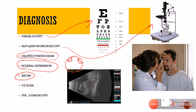CT scan and B-scan are important especially in trauma cases to detect intraocular foreign bodies. FFA can identify neovascularization but only when vitreous hemorrhage is localized, not diffuse, since hemorrhage causes blocked fluorescence making fundus visualization on fluorescein angiography difficult. Gonioscopy is used to visualize the angle and look for neovascularization in the anterior chamber angle.